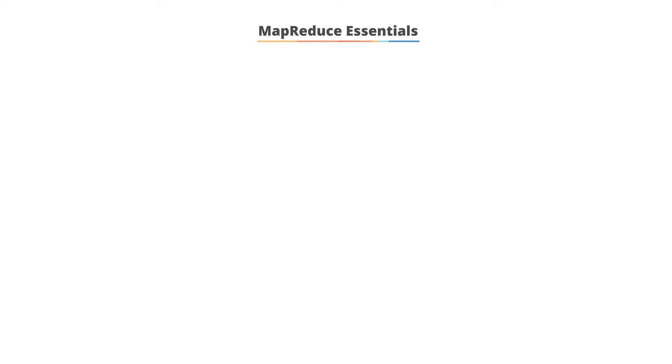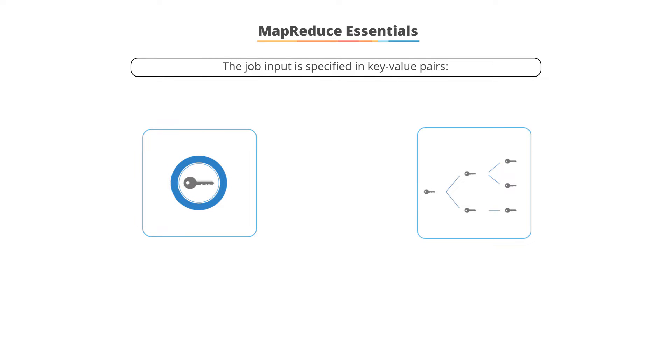The essentials of each MapReduce phase are shown on the screen. The job input is specified in key-value pairs. Each job consists of two stages. First, a user-defined map function is applied to each input record to produce a list of intermediate key-value pairs.